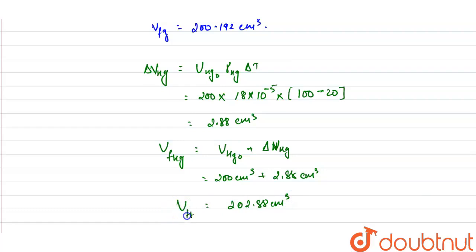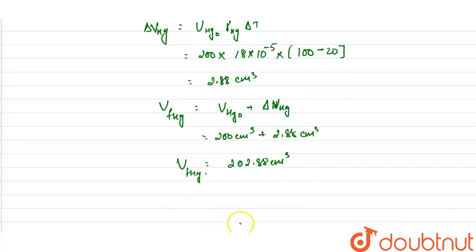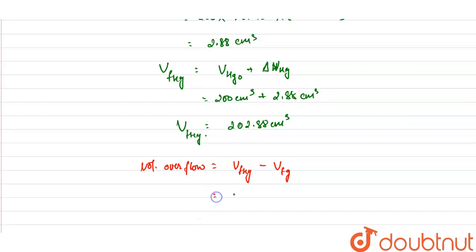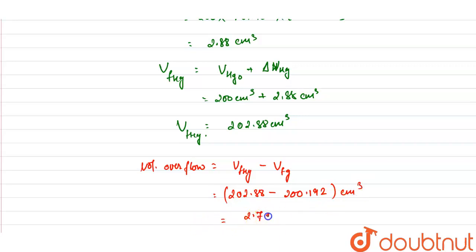After expansion in volume, the extra amount of mercury will overflow. The volume overflow equals the final volume of mercury minus the final volume of glass. So 202.88 minus 200.192 centimeter cube gives us 2.7 centimeter cube. The volume overflow is 2.7 centimeter cube.